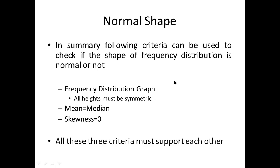In summary, the following criteria can be used to check if the shape of a frequency distribution is normal: first, the frequency distribution graph must be symmetric about the center of symmetry; second, the mean should equal the median; and third, skewness should equal zero. These three criteria must support each other — if the frequency distribution graph suggests normality, the mean-median comparison and skewness value should confirm the same.